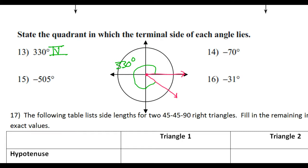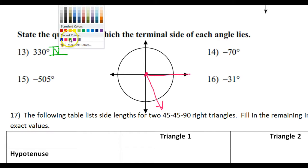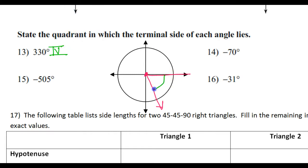Look at number 14: negative 70 degrees. Again, starting with the positive x-axis. Because it's negative, we go clockwise. If I went to here, that would be negative 90 degrees, and that's already too far. So I'm going to back up from that and stop here. So this is a picture of negative 70 degrees — it's not all the way to negative 90. That's another one that is in the fourth quadrant.